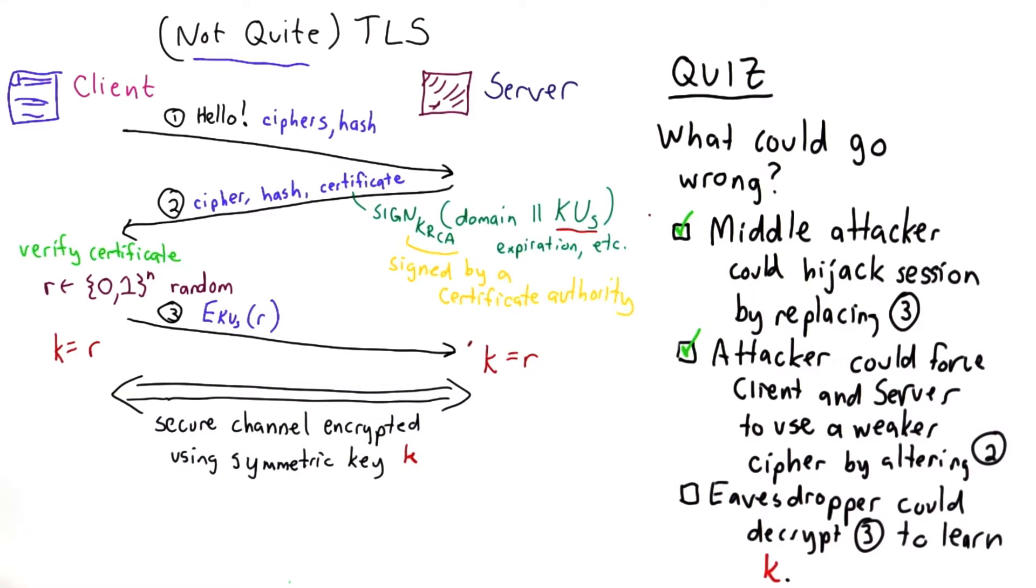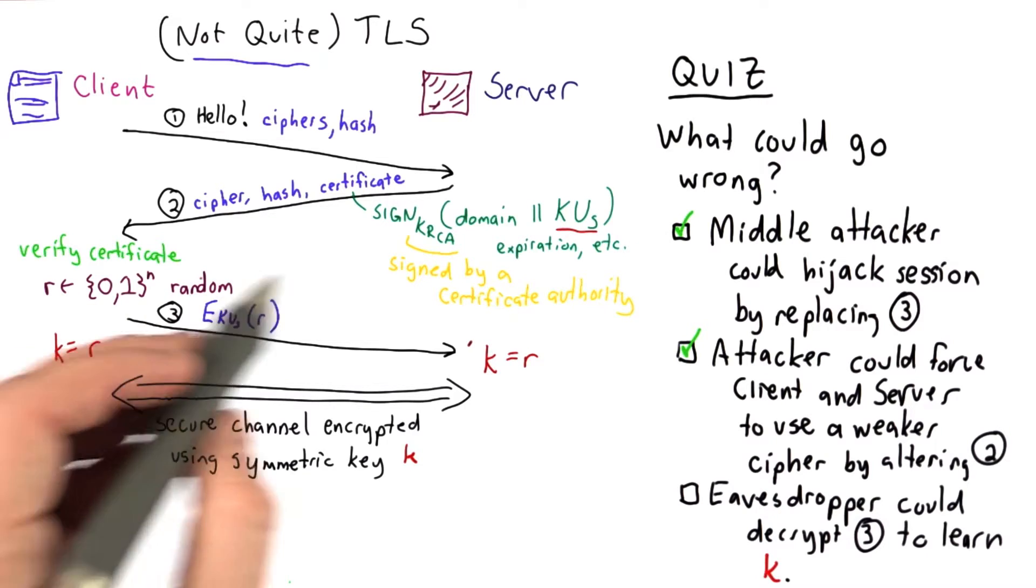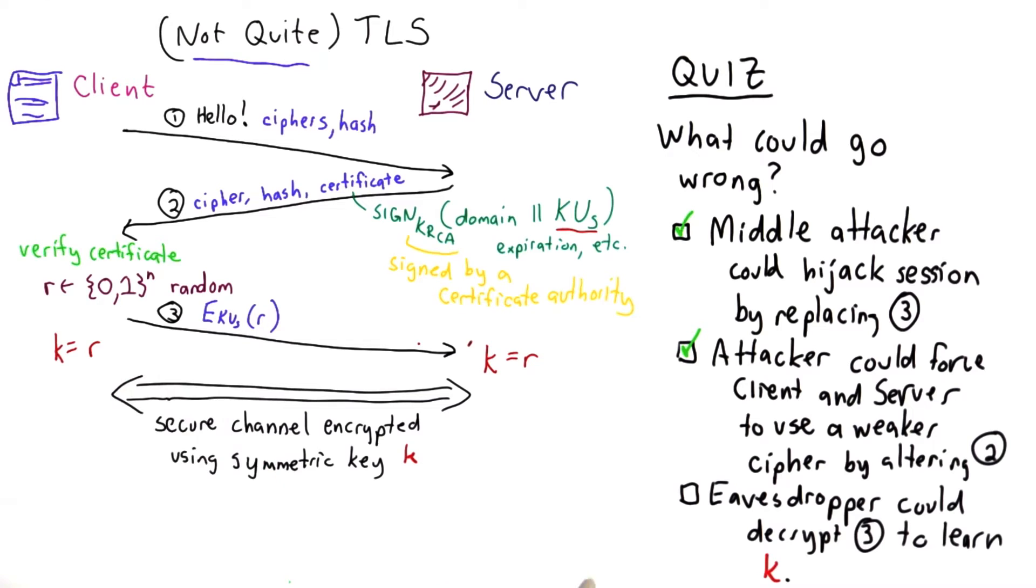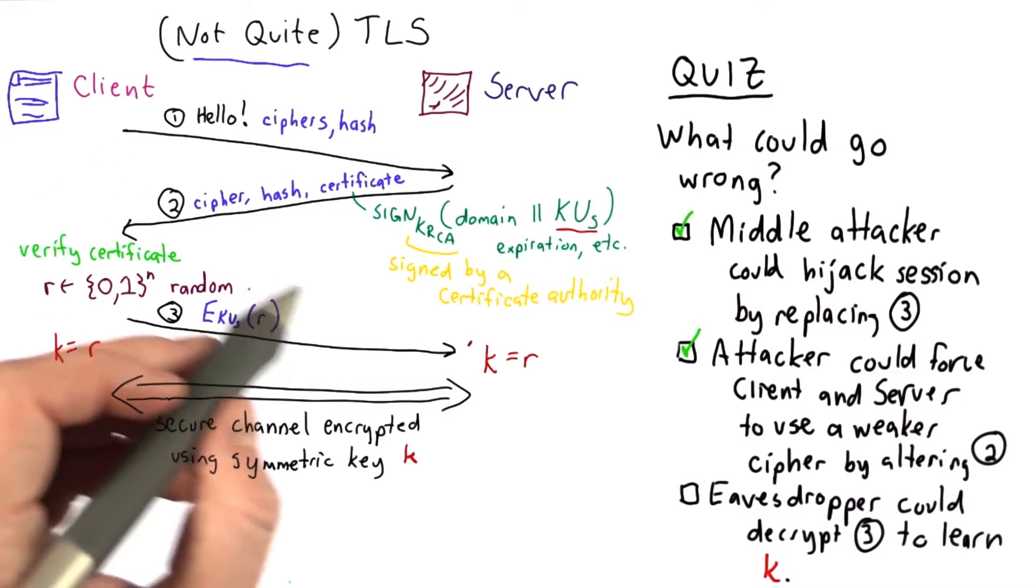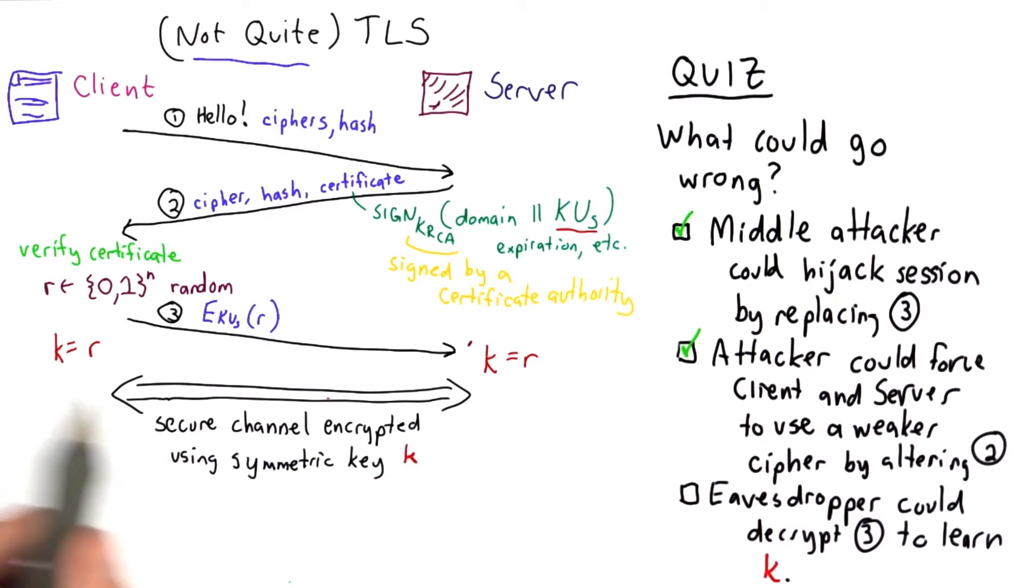So these are two pretty fundamental problems. So that's not going to work, so we need to make some improvements here. So the way to solve this problem is to include more randomness in the key here. So an attacker who can replace this won't be able to trick the parties into agreeing to a different key. And then they can verify that they've agreed on the same key.